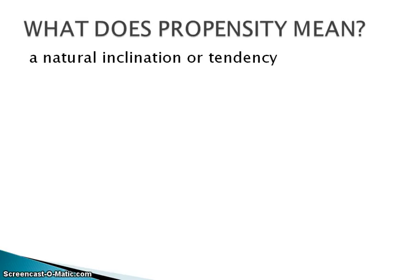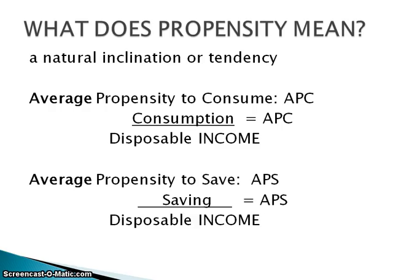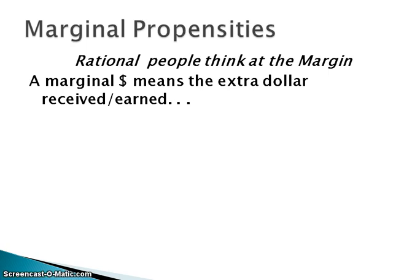When we talk about the propensity to consume or the propensity to save — whether average or marginal — we're basically looking at the inclination or tendency that people have. The average propensity to consume is consumption divided by disposable income: the average amount you spend based on how much you have. The average propensity to save is savings divided by disposable income. But that's the general view, and that's not how economists think.